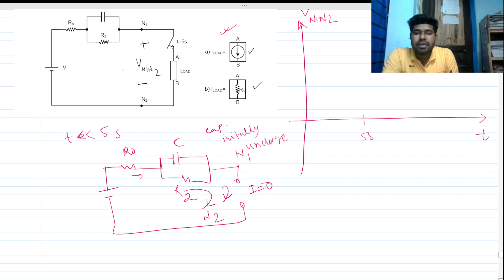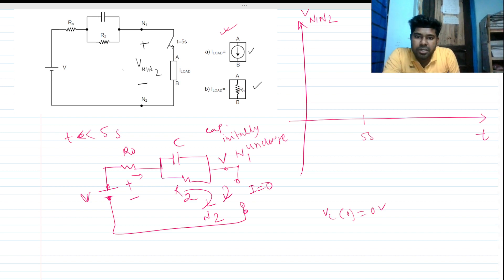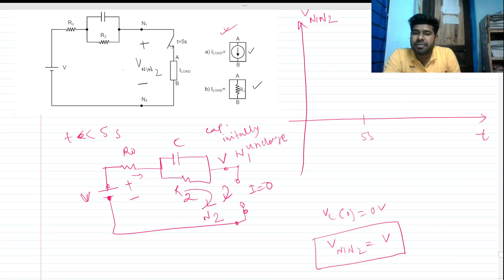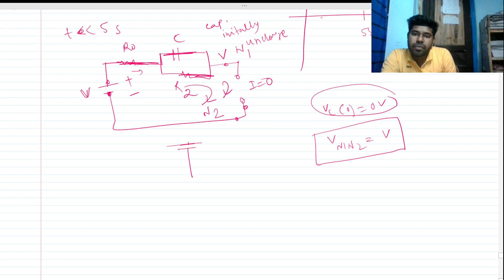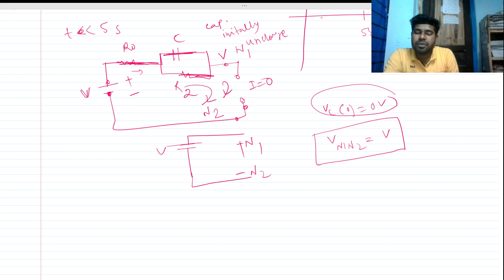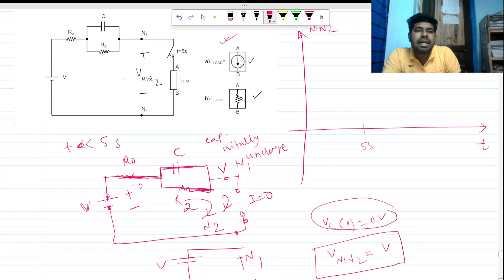The current is zero, and we assume the capacitor is initially uncharged, so V_C(0-) is zero. There is no voltage drop, so this potential remains, and V_plus comes to node d. So V_n1n2 remains V when time is less than 5 seconds. The circuit simply becomes a short with V, so V_n1n2 equals V.